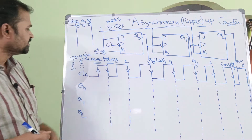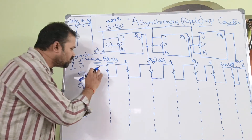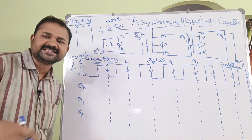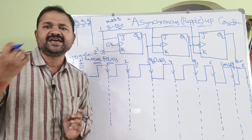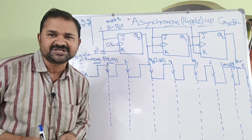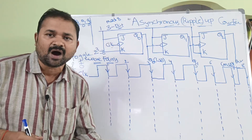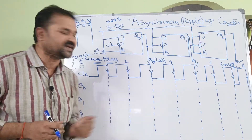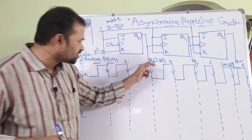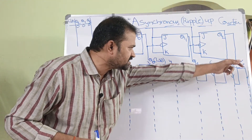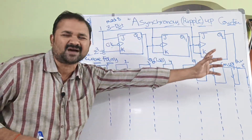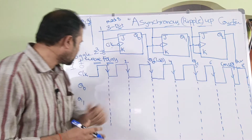Now let us see the waveforms. This is the clock pulse. Every clock pulse has 2 edges — one is the rising edge, also called the positive edge, and the second is the negative edge or falling edge. Both terms have the same meaning. Totally we have 8 clock pulses, so we need to apply 7 or 8 clock pulses.